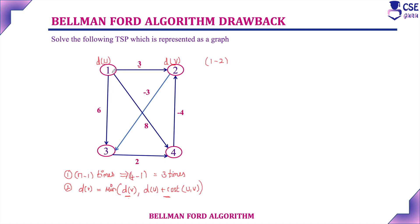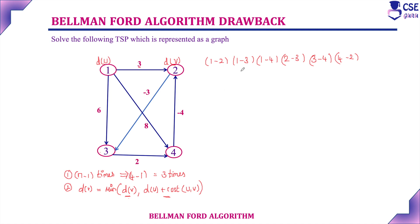We will order the edges according to the vertices order. That is: 1 to 2, 1 to 3, and 1 to 4. Then considering vertex 2, we have 2 to 3 only. For vertex 3, we have 3 to 4 only. And for vertex 4, we have 4 to 2. So these are all the edges present in this given graph, and in this edge order we are going to relax the edges.